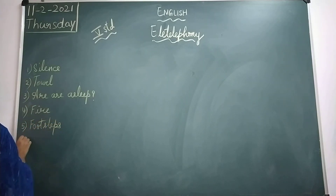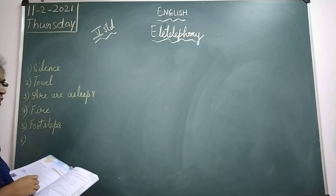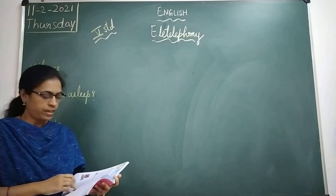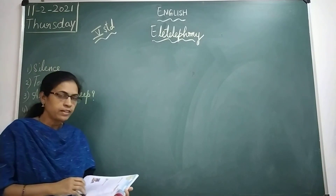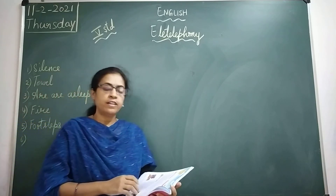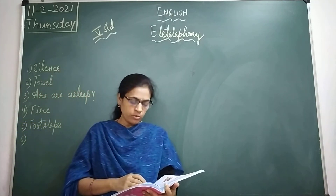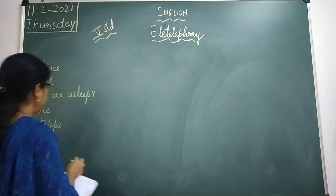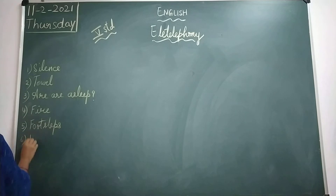And the last riddle: I am lighter than a feather, but a million men can't lift me. So what am I? The answer is Due drops.